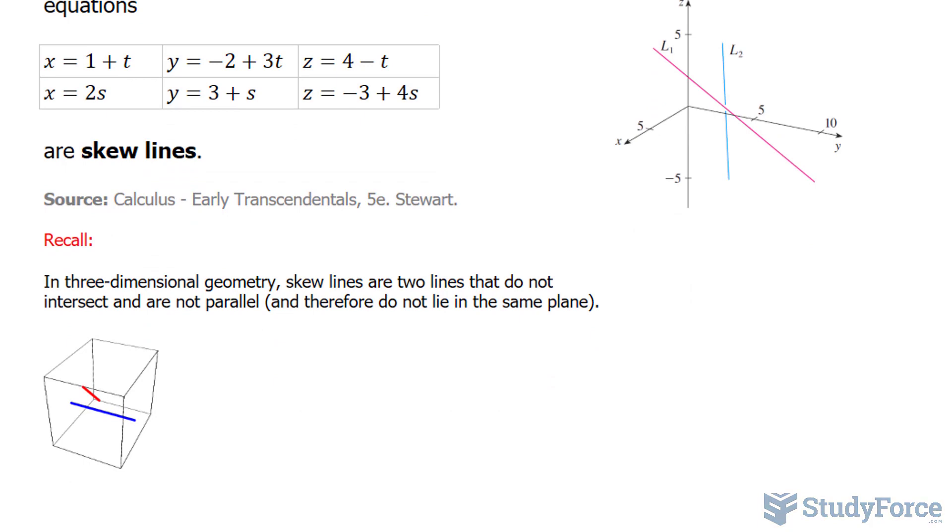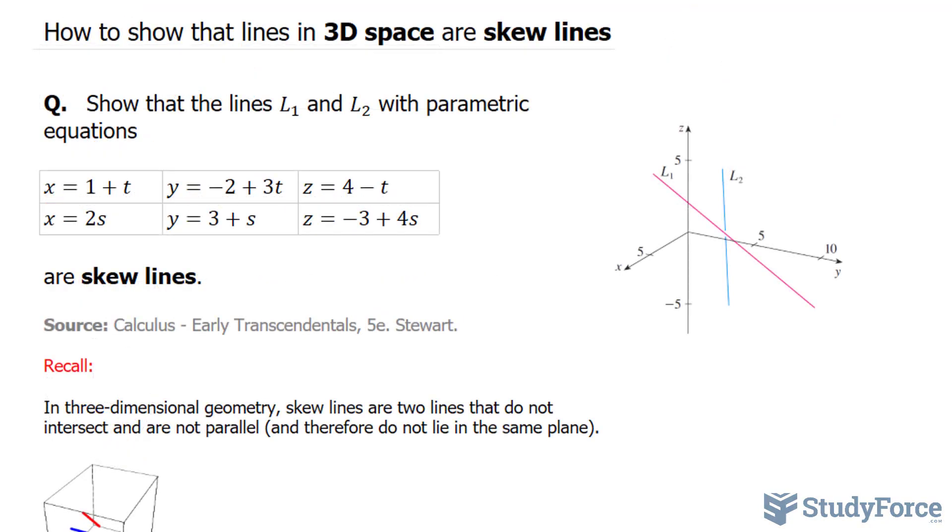Take a look at this illustration. We have two lines that do not intersect and are not parallel. When you're provided with the parametric equations of a line in 3D space, you can extract from these equations the direction vector.